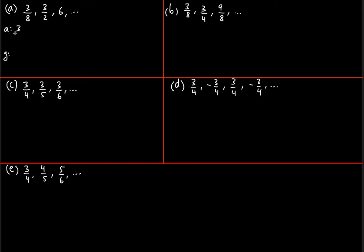So 3/2 minus 3/8 should be equal to 6 minus 3/2 — the difference between these two should be the same as the difference between these two. Let's check this difference first. The denominator is 2 and we need it to be 8, since the least common multiple of 2 and 8 is 8. Two times 4 is 8, so three times 4 is 12, giving us 12/8.